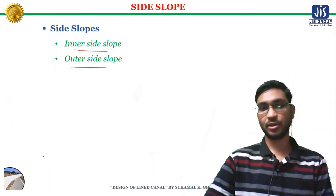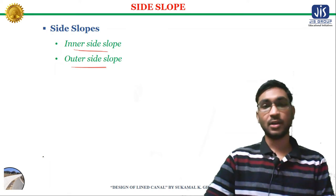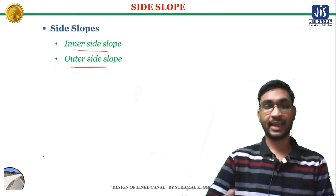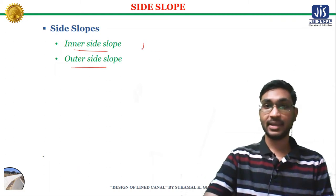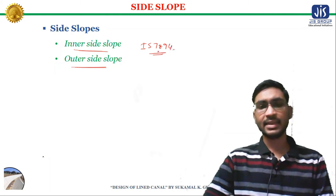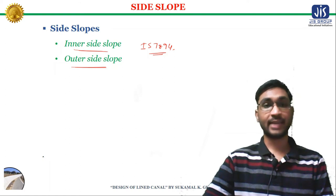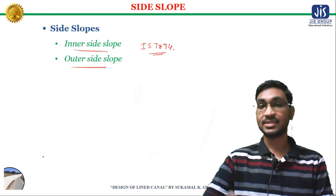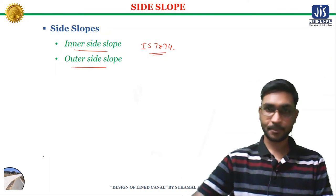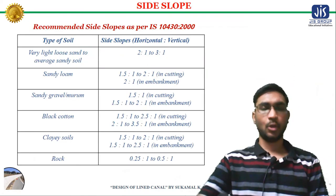Where the chance of sudden drawdown in the canal is considerable, the canal slope should be checked for stability using the slip circle analysis as given in Indian Standard 7894. In addition, other suitable measures like adequate drainage should be provided before the lining works commence. As a rule, steeper slopes are economical but stable slopes depending on the types of soil are preferred.